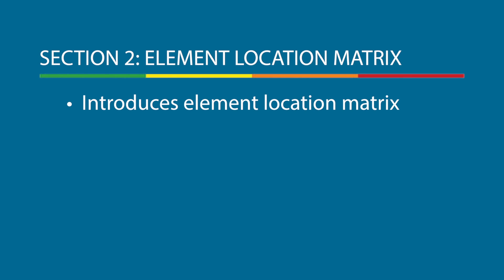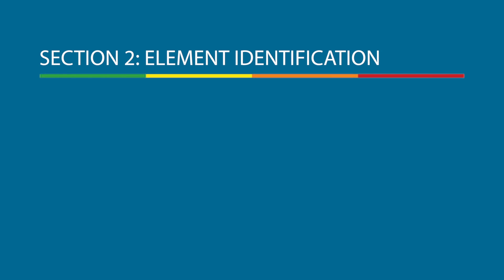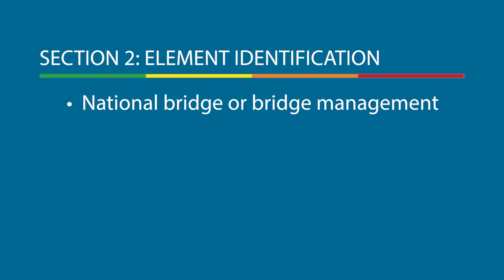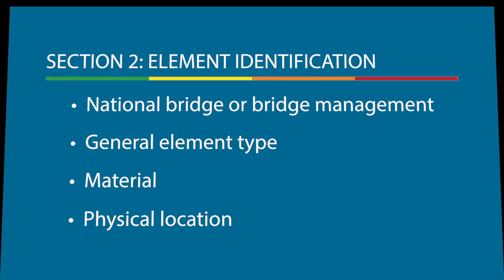Section 2 introduces an Element Location Matrix, which presents a Master Location Matrix of all the elements and identification numbers for quick reference. To facilitate ease of use by bridge inspectors in the field, each element in the matrix is identified as either a National Bridge Element or a Bridge Management Element. Then they are grouped by element type and material, as well as in accordance to their physical location on the bridge.